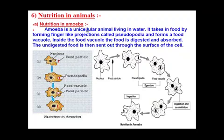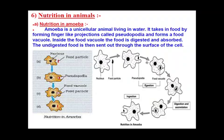Amoeba is a unicellular organism which lives in water. As you have studied in class 9th, whenever a food particle approaches amoeba, it starts expanding finger-like projections towards it. These finger-like projections are known as pseudopodia, and they engulf and encircle the food particle.